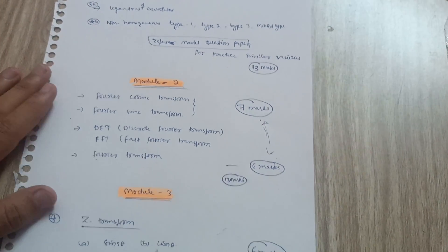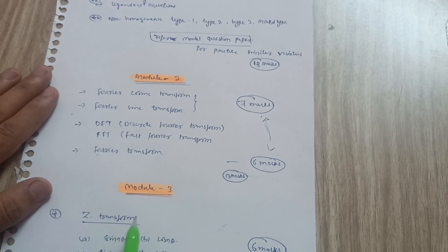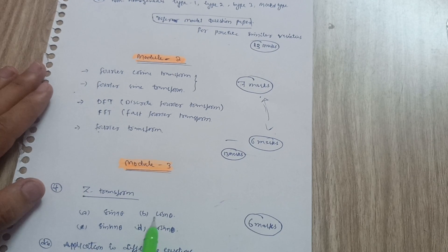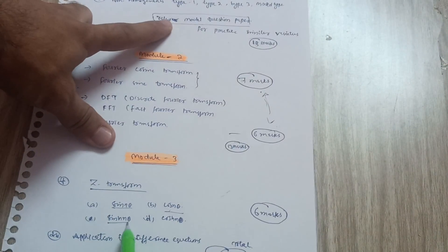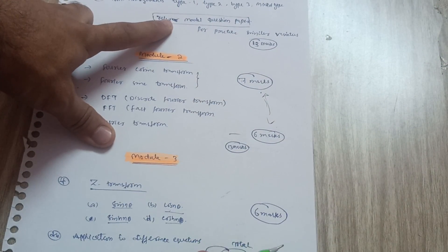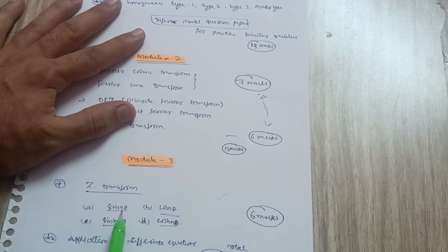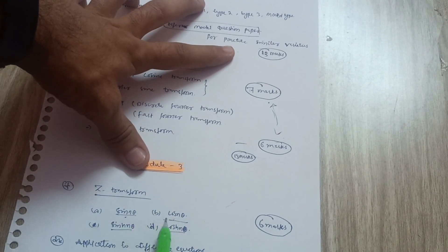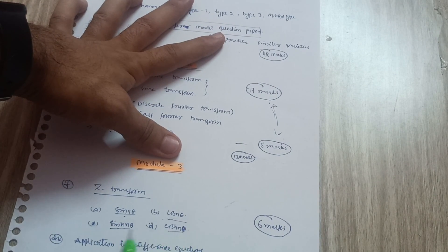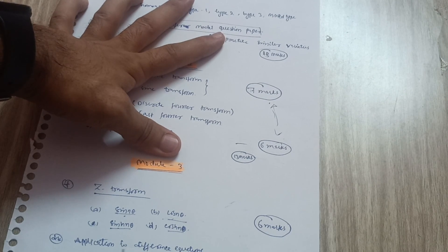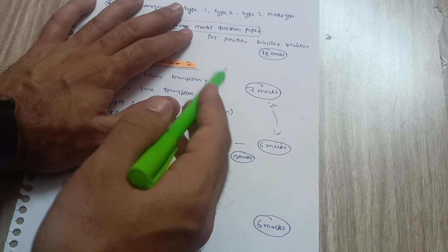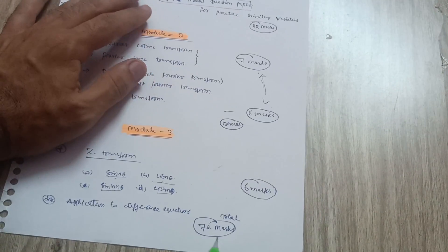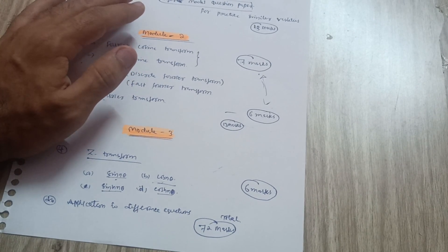In Module 3, cover at least 6 marks worth of content as it is the toughest module. Focus on finding the Z-transform of sin(nθ), cos(nθ), sinh(nθ), and cosh(nθ) — these are the most frequently asked questions in the university examination. If you have time, cover applications to difference equations as well. When I sum up all these marks across modules, the total comes to approximately 72 marks — and if you cover these topics, you will definitely pass.